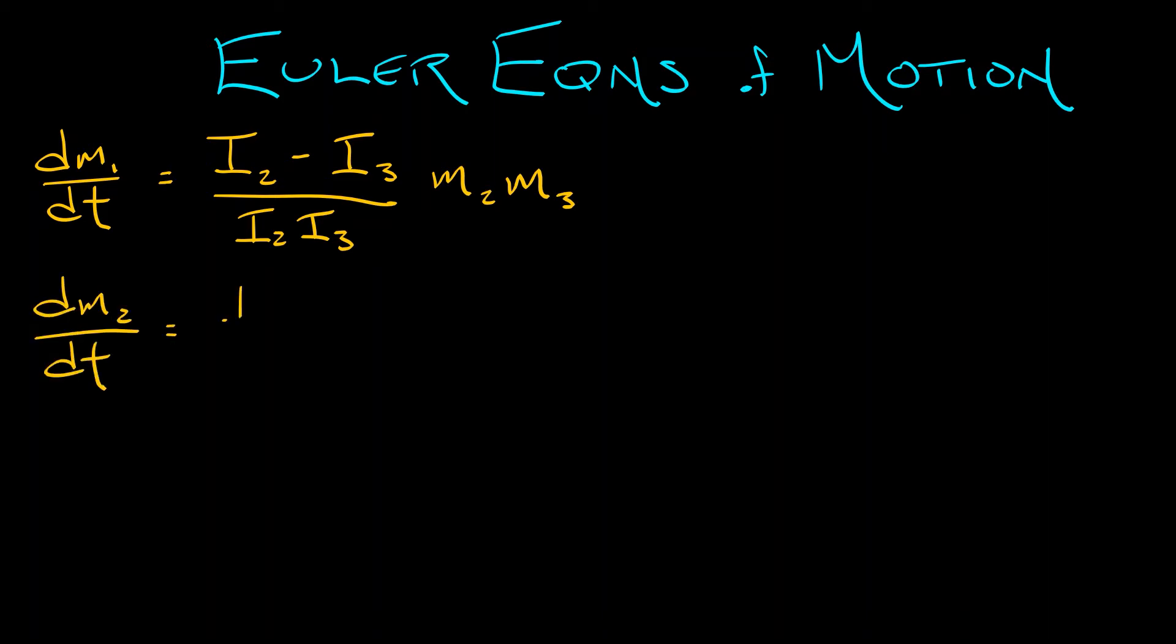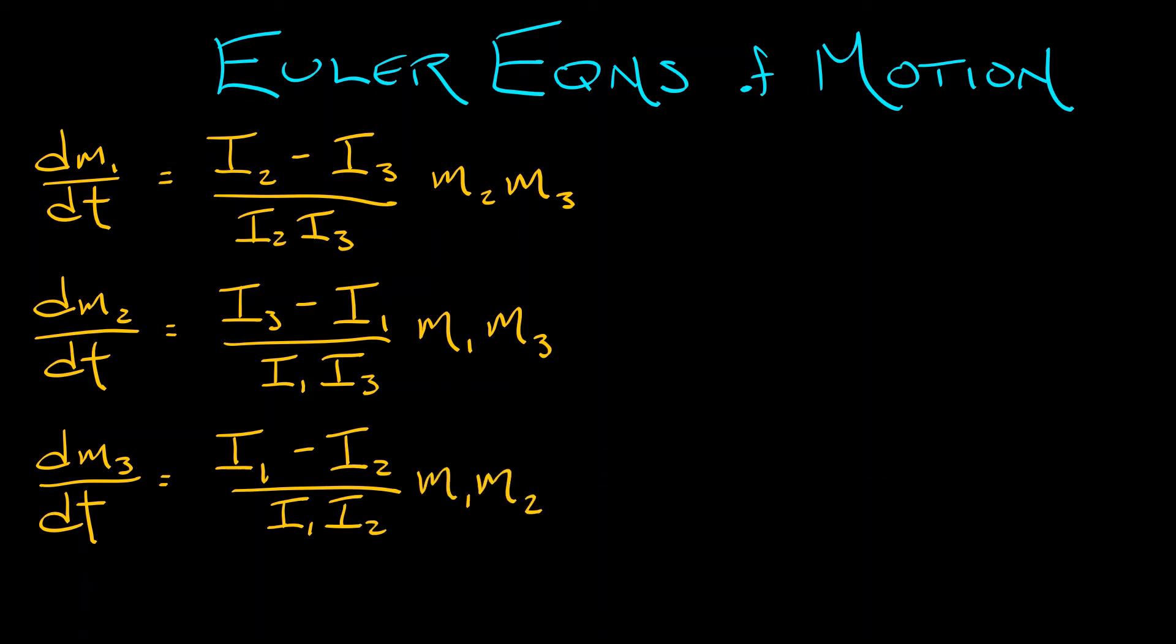dm2 dt is given by i3 minus i1 over i1 times i3 times m1 times m3. And the derivative of m3 with respect to time is i1 minus i2 divided by i1 times i2 times m1 times m2. You can see there's a lot of symmetry in there. We're not going to derive these equations. They come from solid body mechanics.